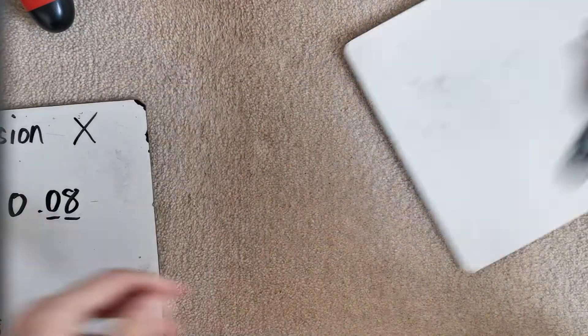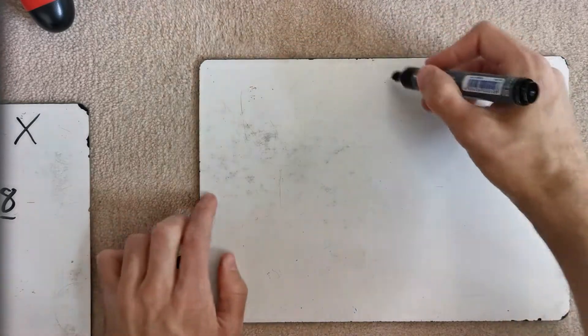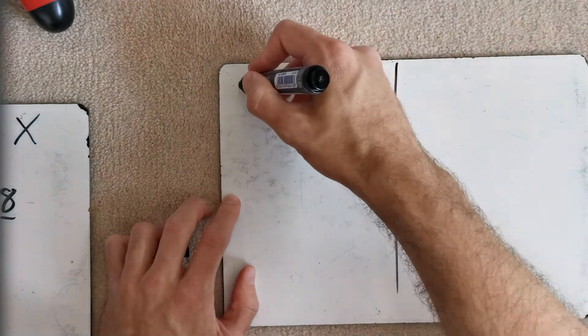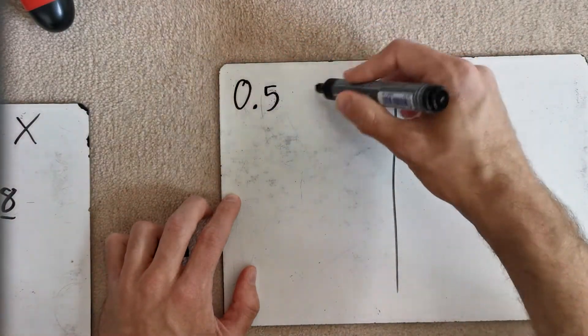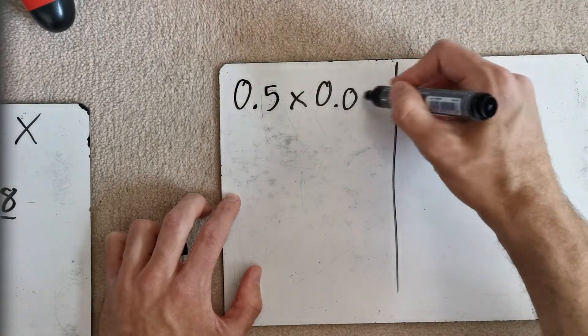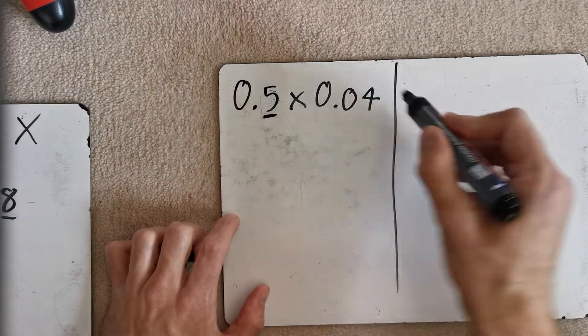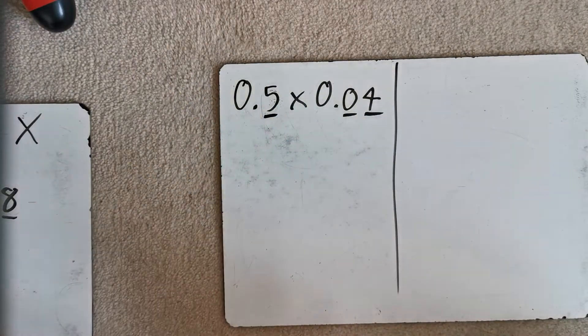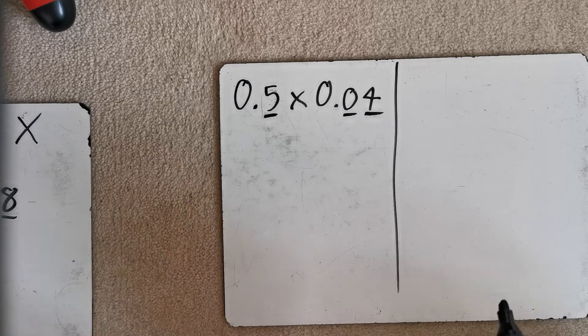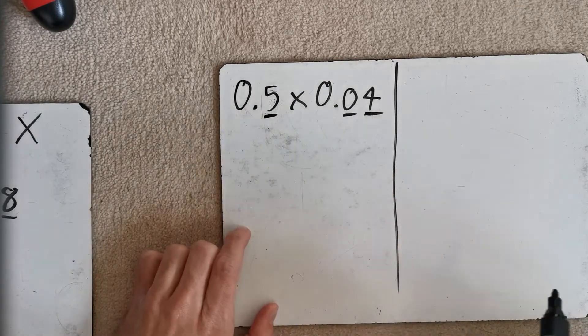Okay, there we go. Okay, right, let's do another quick example of that because sometimes they might come out as a bit of a funny answer. Let's go for 0.5 times by 0.04. Okay, remember that rule that I just said? A number of decimal places in the question will be the number of decimal places in the answer. Okay, 1, 2, 3 decimal places.